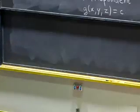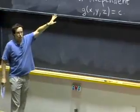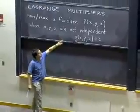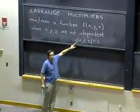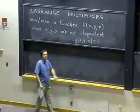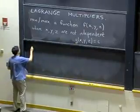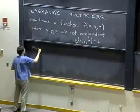The first observation is we can't use our usual method of looking for critical points of f, because critical points of f typically will not satisfy the constraint. So there won't be good solutions; we need something else. Let's look at an example and we'll see how that leads us to the method.